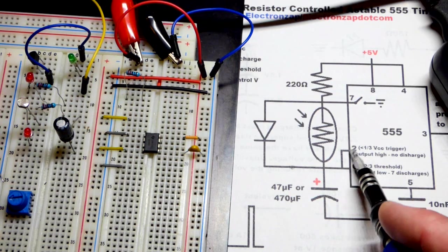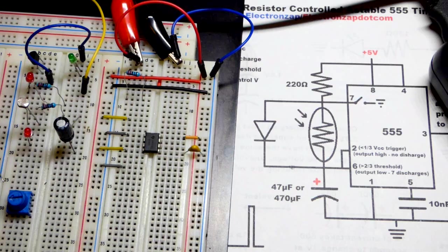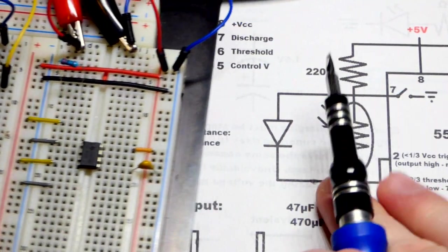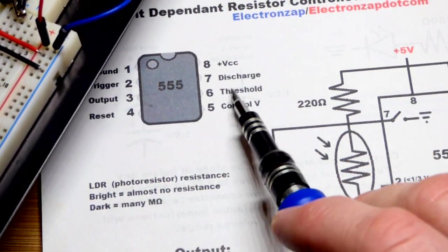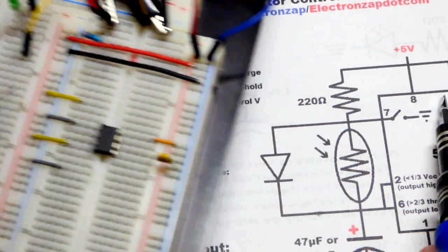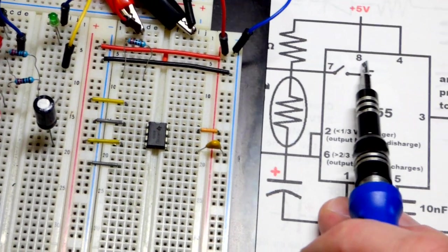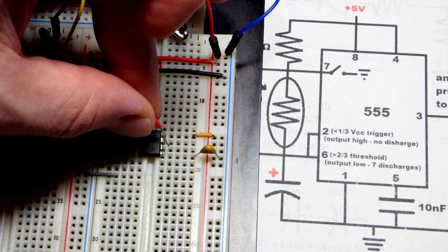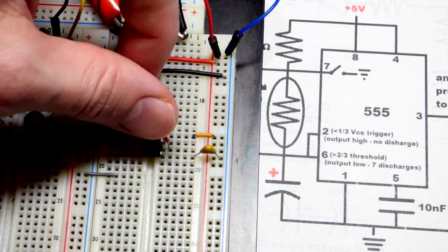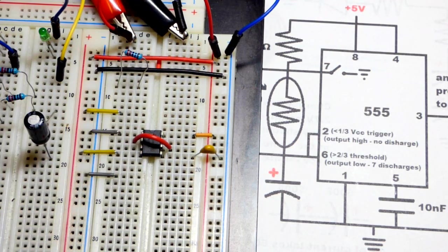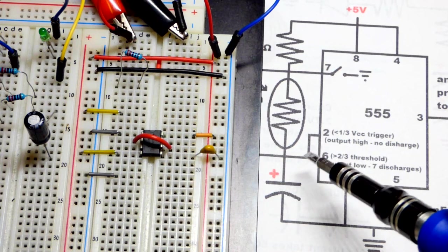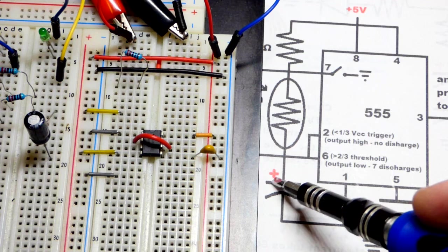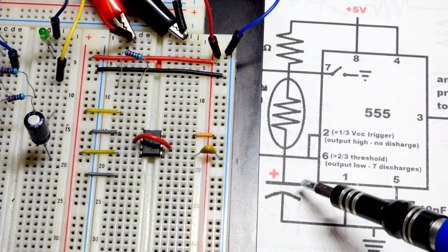We are going to monitor two voltages. So let's get that out of the way right now. So this is the trigger pin. Pin number two is the trigger pin. And then we got the threshold pin, pin number six. They're both monitoring for a voltage. And we want to make sure they are the same voltage. So here's a jumper I made, and we connect them directly right there. So they will always be monitoring the same voltage, which will ultimately be what the capacitor is charged or discharged to.